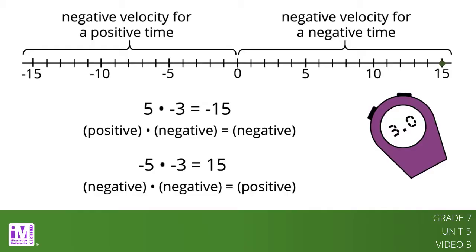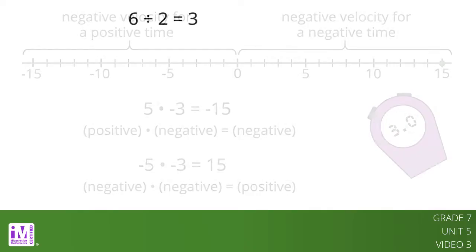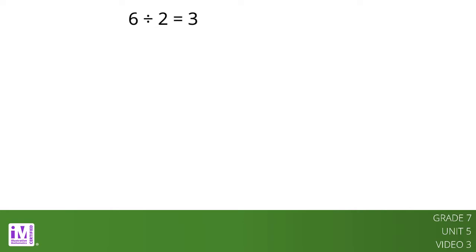Next, let's look at dividing rational numbers. Division is an operation that undoes multiplication. For example, the reason why 6 divided by 2 equals 3 is because 2 times 3 equals 6. We can use what we've learned about multiplying signed numbers to figure out how to divide them.